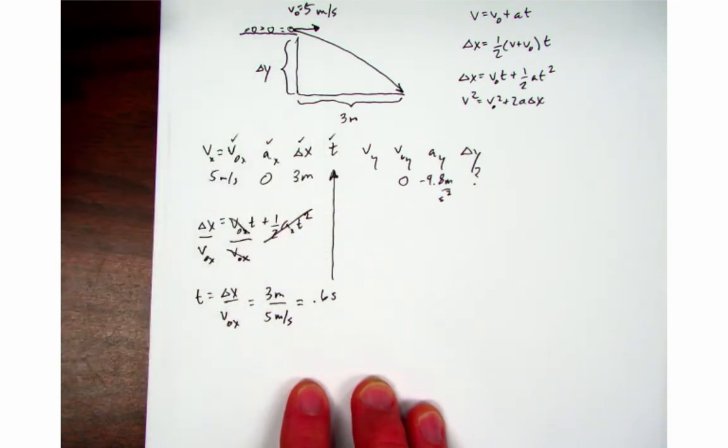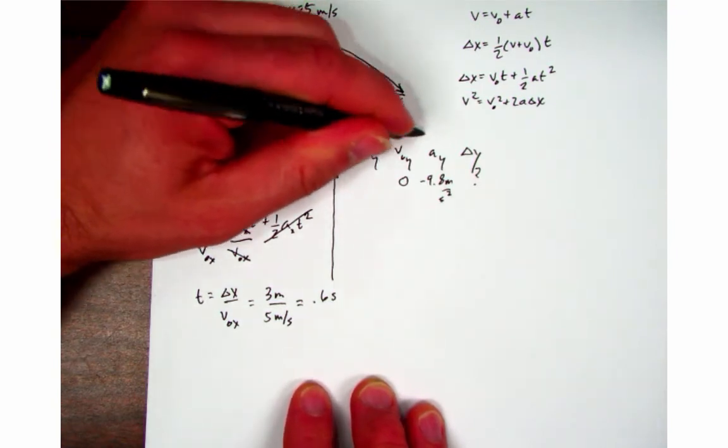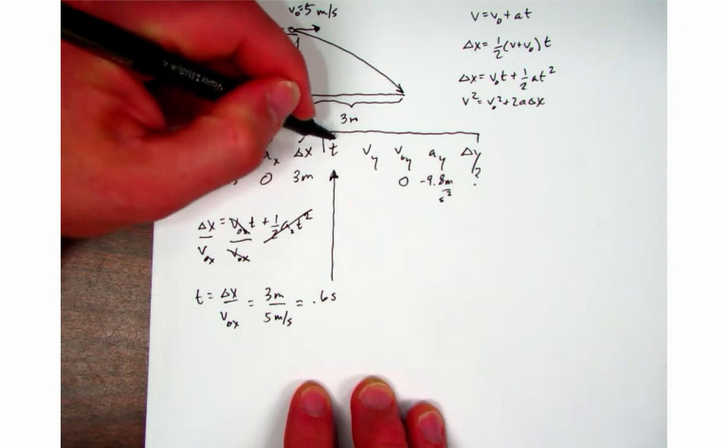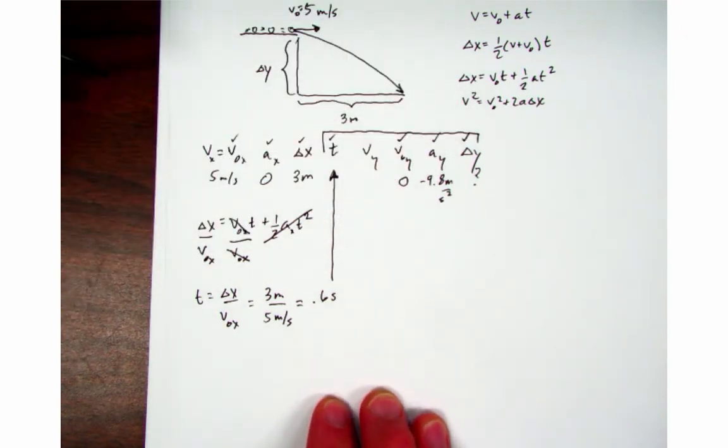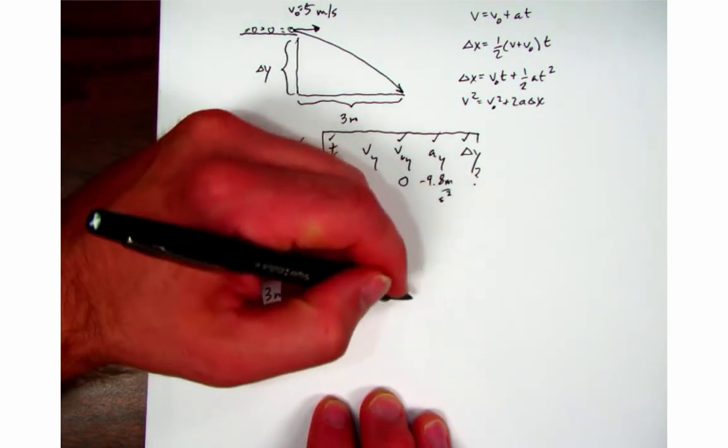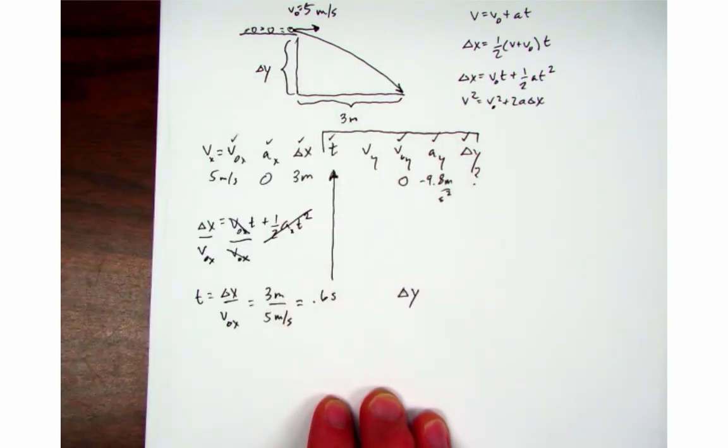That's going to go right up there. Now on the y side, I've got time, v naught y, a_y, and delta y. So again I have the same set of variables that I had on the x side, so I can use the same equation except using y's instead of x's.